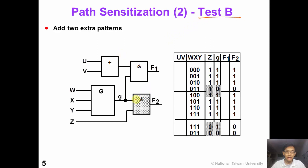Now we move on to segment B. To test segment B exhaustively, it has two inputs G and Z. We do not need to add four test patterns. Looking at the first eight test patterns closely, we find we already have patterns 1011 and 1111 applied. So we only need to insert two more patterns — 01 and 00 — to test partition B exhaustively with just two additional patterns.